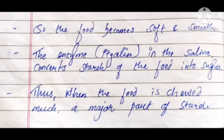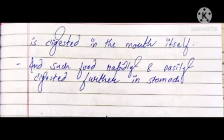The enzymes in the saliva convert the starch of the food into sugar. So when the food is chewed well, a major part of the starch is digested in the mouth itself, and such food is rapidly and easily digested further in the stomach.